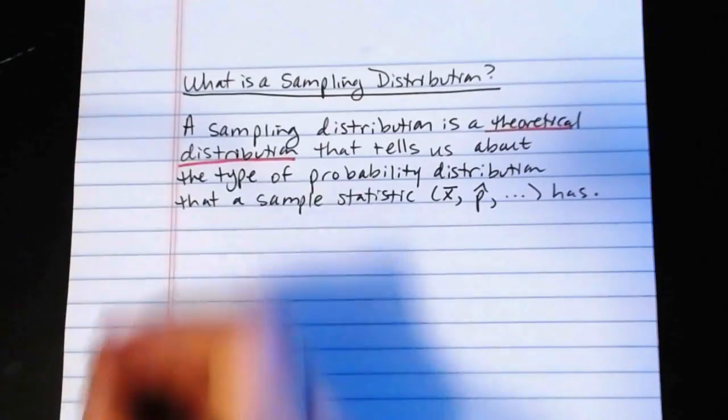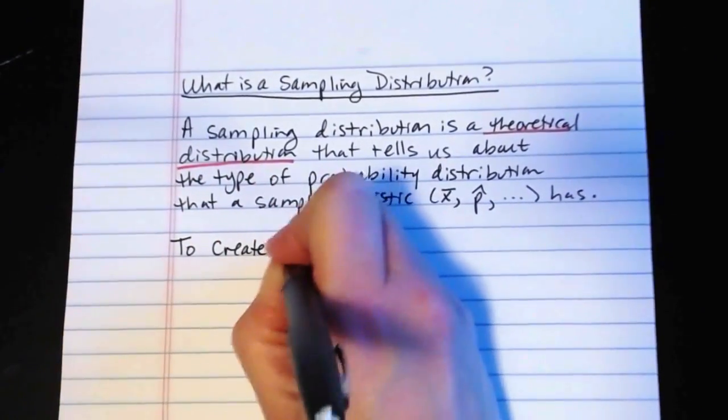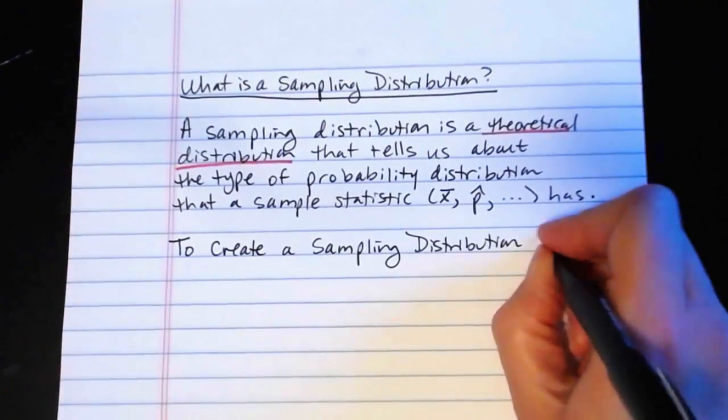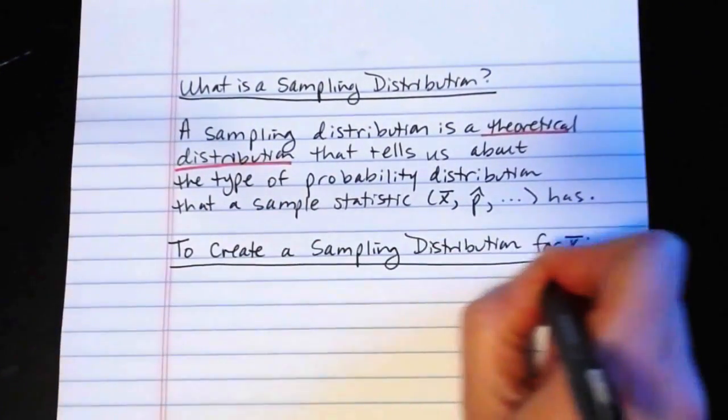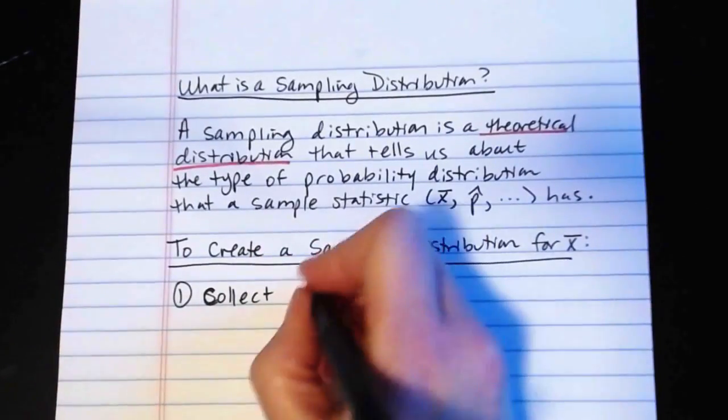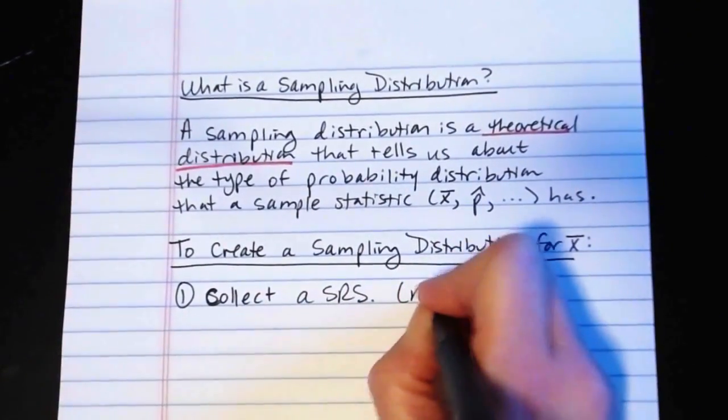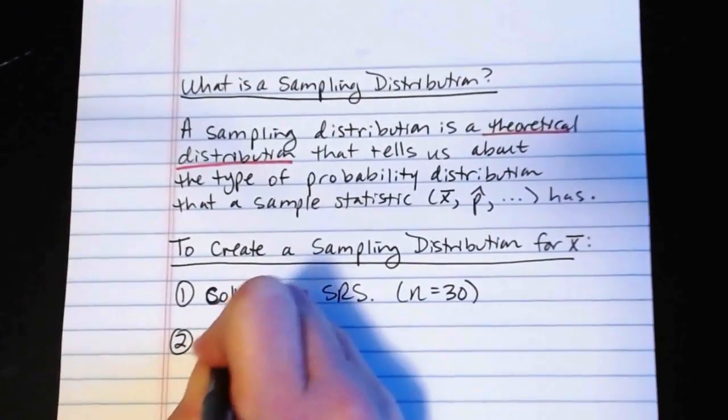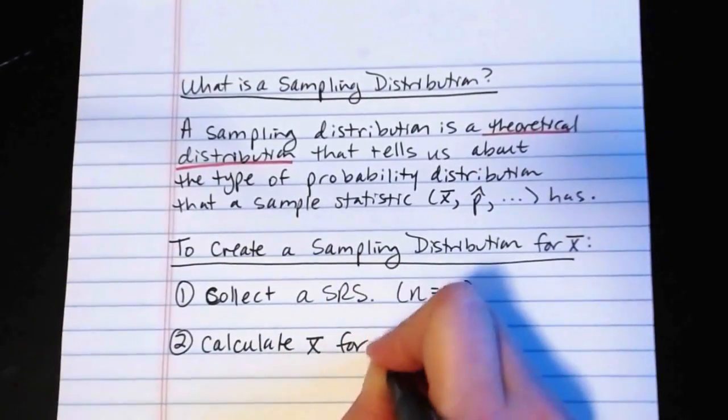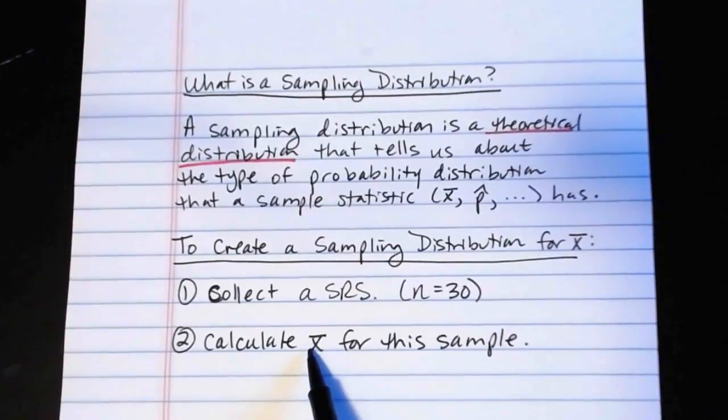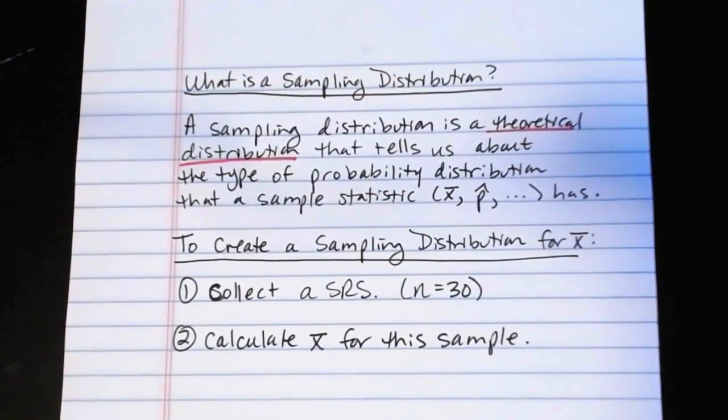That being said, if you were to create one, here is how you would do it. So to create a sampling distribution, and for the sake of argument, let's say we were creating a sampling distribution for x bar for a sample mean. One, collect a simple random sample. And let's say I was collecting random samples of size 30. That's what I'm going to be doing in my simulation that will be in the next video. So collect a simple random sample of 30 individuals. Two, calculate x bar for this sample. Okay, in the simulation that will be in the next video, the average that I'm calculating is the average age for that sample. So I have a sample of 30 individuals and I calculate the mean age.